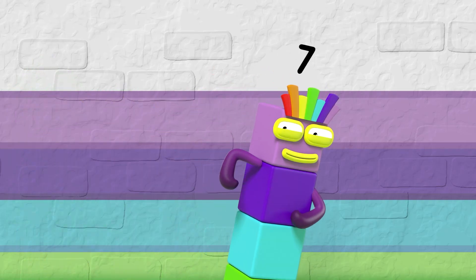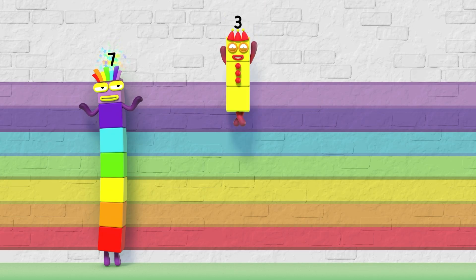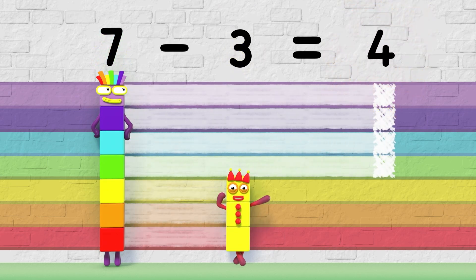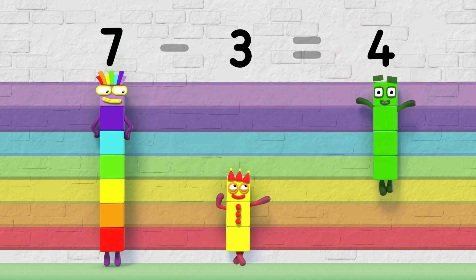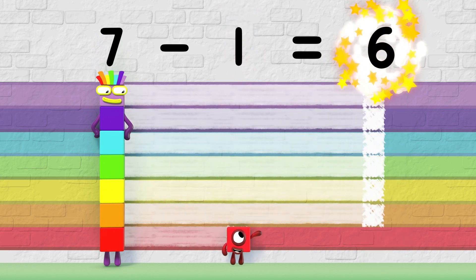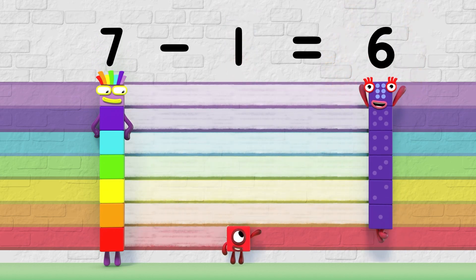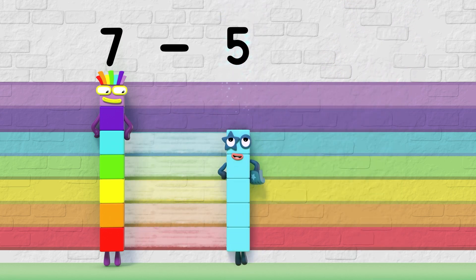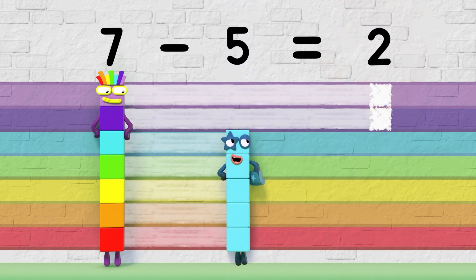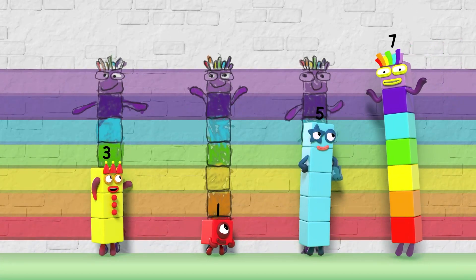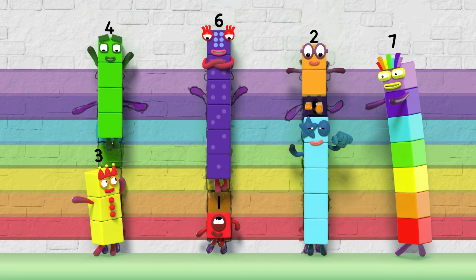So what's the difference? Seven minus three equals four — that's the difference. Seven minus one equals six — that's the difference. Seven minus five equals two — that's the difference. So make up the difference, and everyone will see what the difference is between you and me.